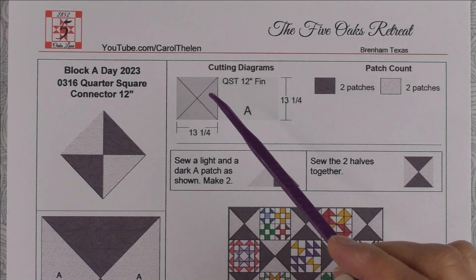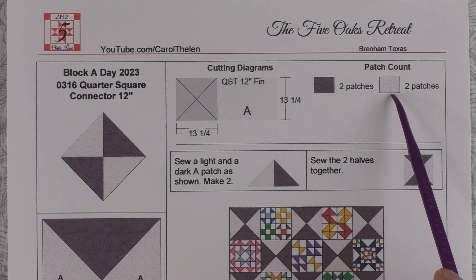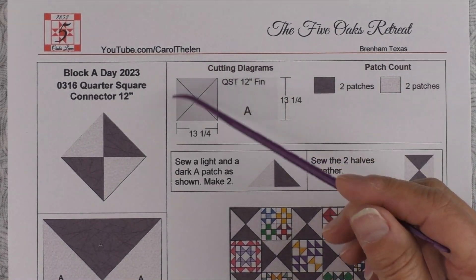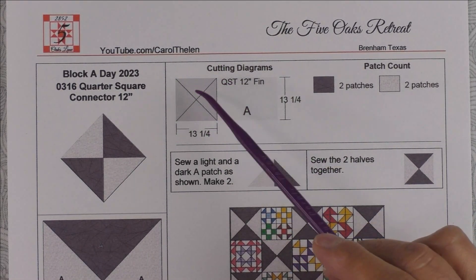Then you'll have four patches and you'll need two patches of each color for one block. So if you cut a light and a dark each at thirteen and a quarter and you cut them on the diagonal twice, you'll have enough for two blocks.